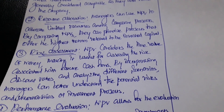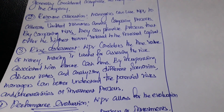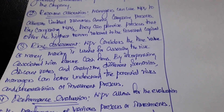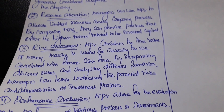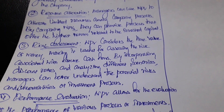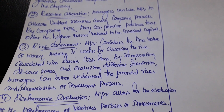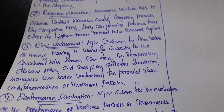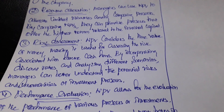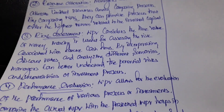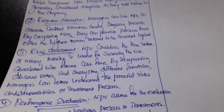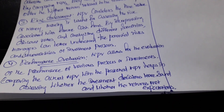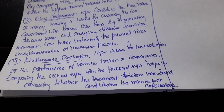The next use is risk assessment. NPV considers the time value of money, making it useful for assessing the risk associated with future cash flows. By incorporating discount rates and analyzing different scenarios, managers can better understand the potential risks and uncertainties of investment projects.